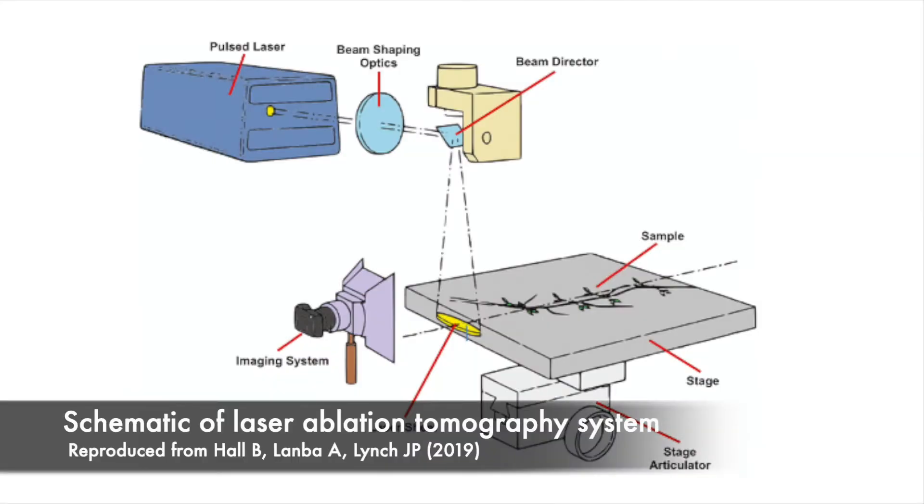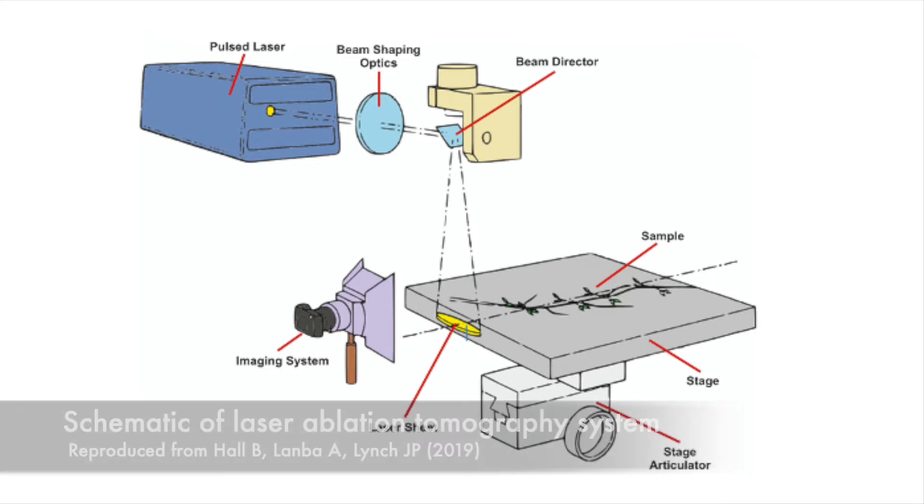So here we can see a general schematic of the laser ablation tomography system. Its base is a UV laser source which is projected at 355 nanometers and it occurs at a pulsed repetition rate somewhere between 25 kilohertz and 40 kilohertz which is appropriate for most of our samples.